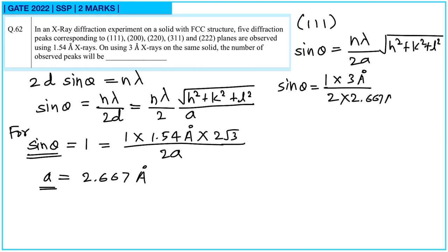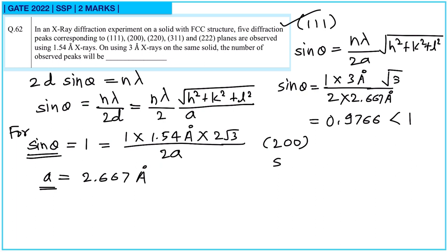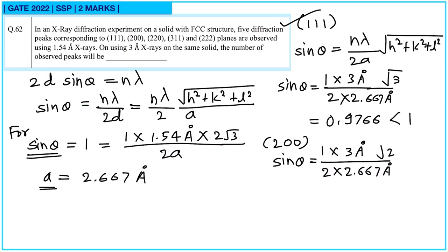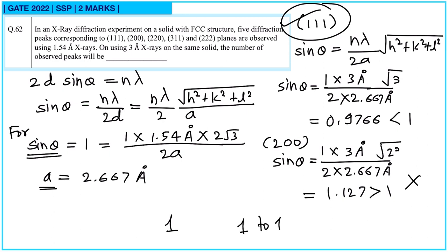Continuing the calculation for (111): sin(theta) = (1×3)/(2×2.667) × sqrt(1^2+1^2+1^2) = 0.9766, which is less than 1, so this peak is observed. For the (200) plane: sin(theta) = (1×3)/(2×2.667) × 2 = 1.127, which is greater than 1 — not possible. Therefore only one peak can be observed, and the answer is 1. These were all the questions from the GATE 2022 paper. If you like this video, please give it a thumbs up and subscribe for more videos. Keep learning.